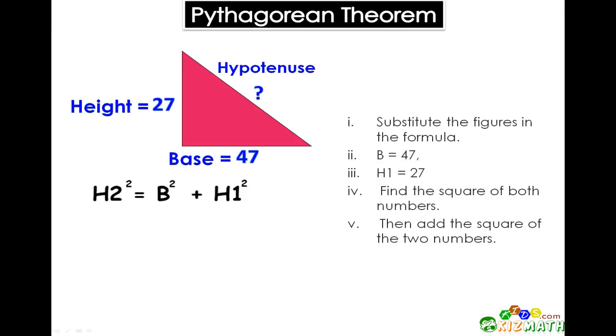Now let's try to use the theorem with numbers. The height equals 27 and the base equals 47. So we can say H2² = 47² + 27². Or H2² = 2,209 + 729.